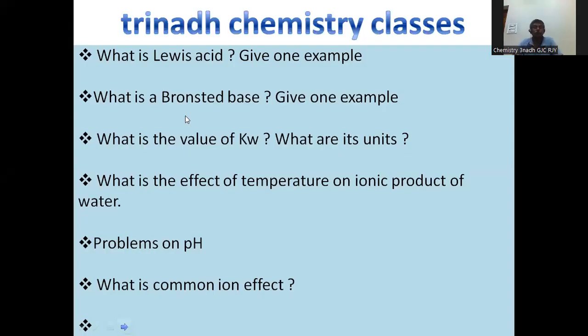Other questions: What is Lewis acid, give example. What is Bronsted base, give one example. What is the value of Kw? That is, ionic product of water - the product of the concentrations of hydronium ion and hydroxyl ion present in water, denoted with Kw, with units of mol square per liter square.